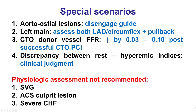There are special scenarios in performing coronary physiology. First, aorto-ostial lesions: engaging them with the guide catheter can cause pressure dampening, which underestimates lesion severity by decreasing the denominator (guide pressure). The guide must be disengaged to ensure no dampened waveform. Second, suspected left main disease: both the LAD and circumflex should be assessed with pullback, because truly significant left main disease should show ischemic indices in both vessels with the step-up at the left main.